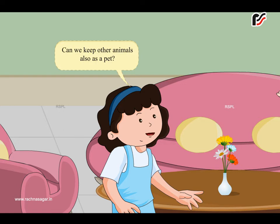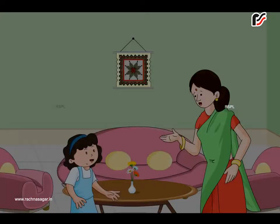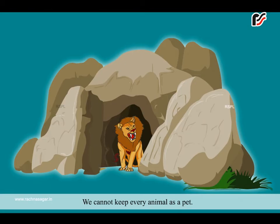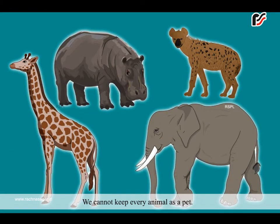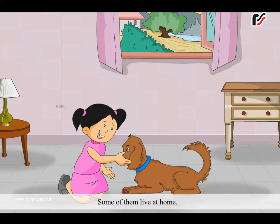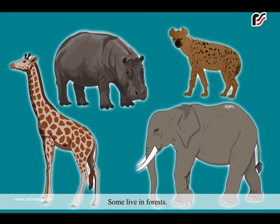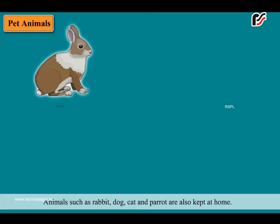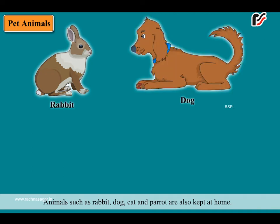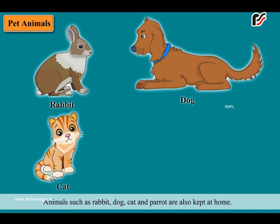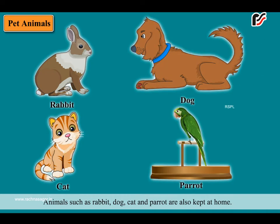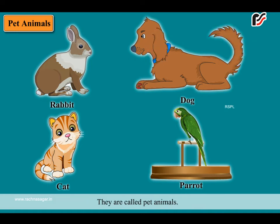Can we keep other animals also as a pet? No, dear. We cannot keep every animal as a pet. Some of them live at home, some live on farms, some live in forests. Animals such as rabbit, dog, cat and parrot are also kept at home. They are called pet animals.